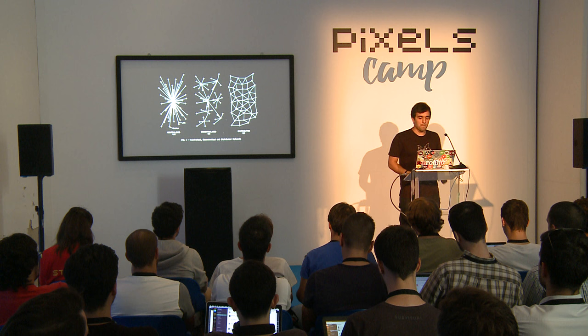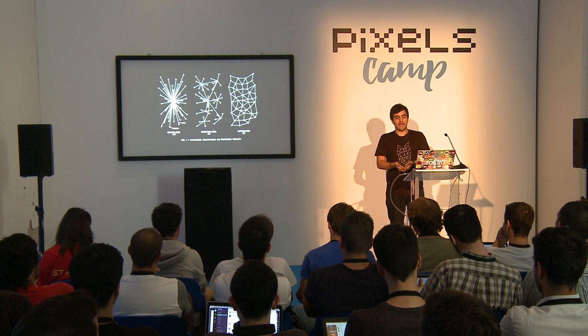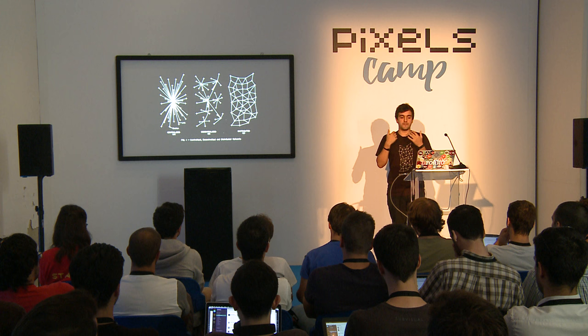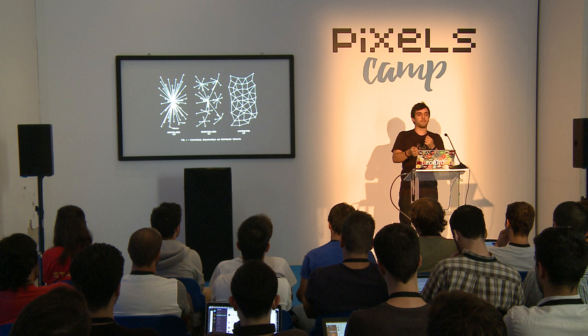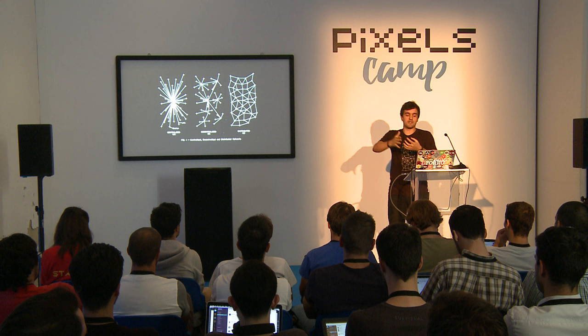ARPANET's goal was exactly to survive an attack. It was a military project where if the United States was under attack and communications were destroyed in part, the rest of the nodes should still be able to communicate. Nevertheless, we managed to evolve our network, but we evolved to a centralized architecture, and we really need to make it distributed again.